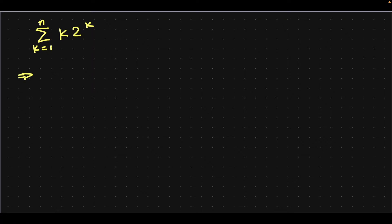Well, one strategy that I urge you to consider for perturbation method is writing the n plus first term. Right now, we have a sum from k equals 1 to n. You can write this as a sum from k equals 1 to n plus 1. Nothing inside changes, but then you can write this in two ways.